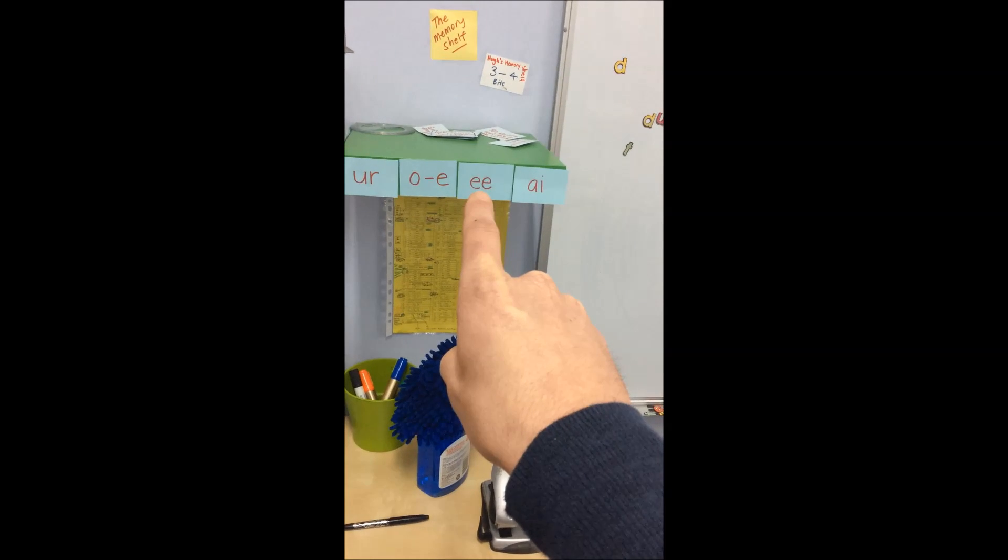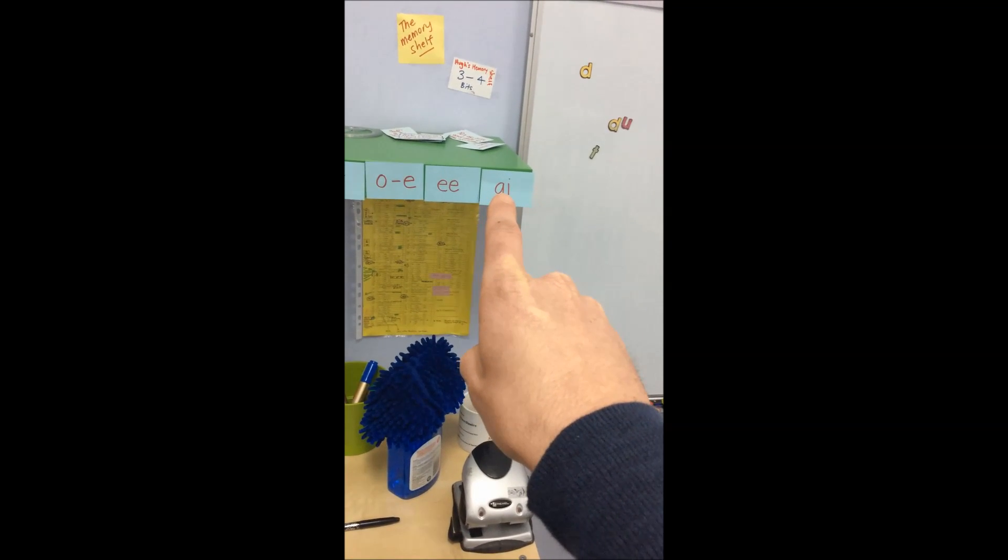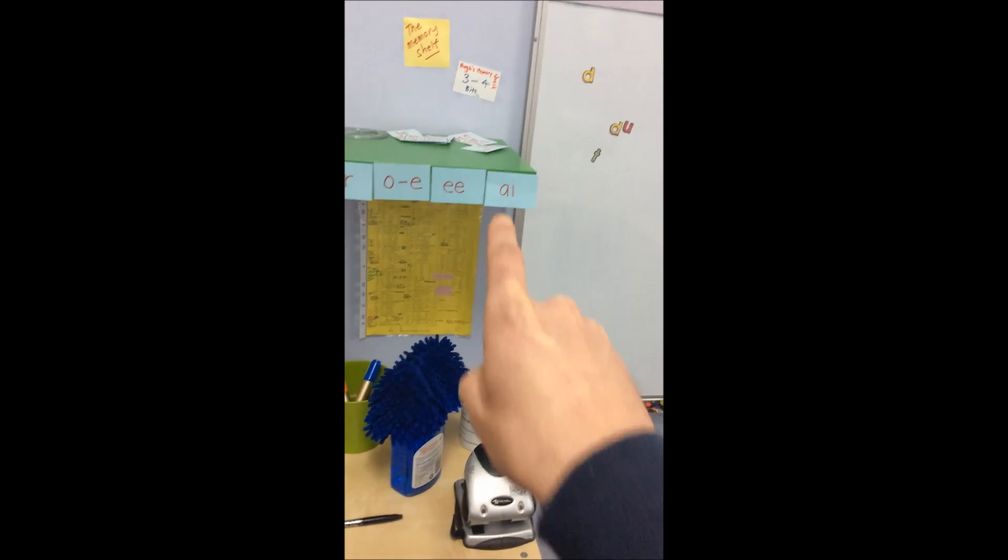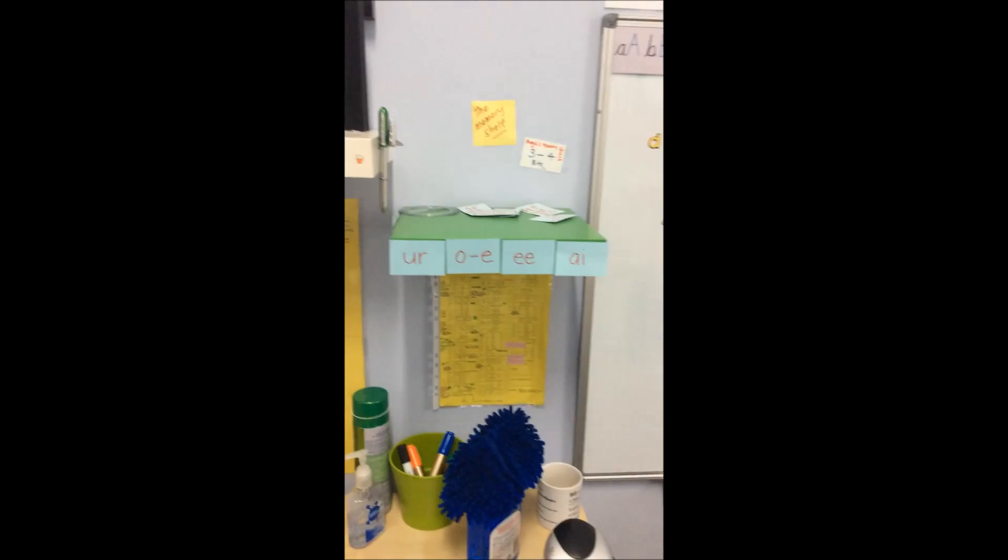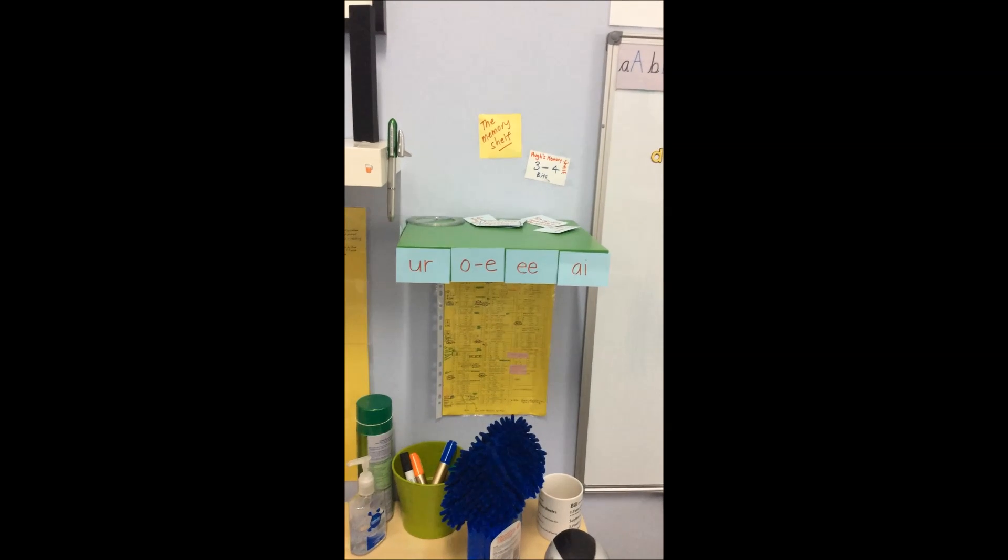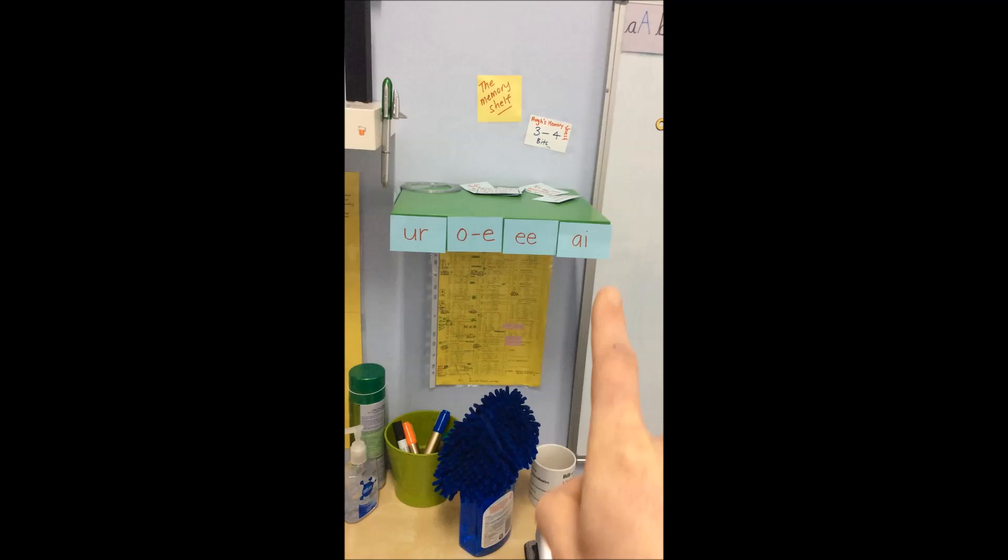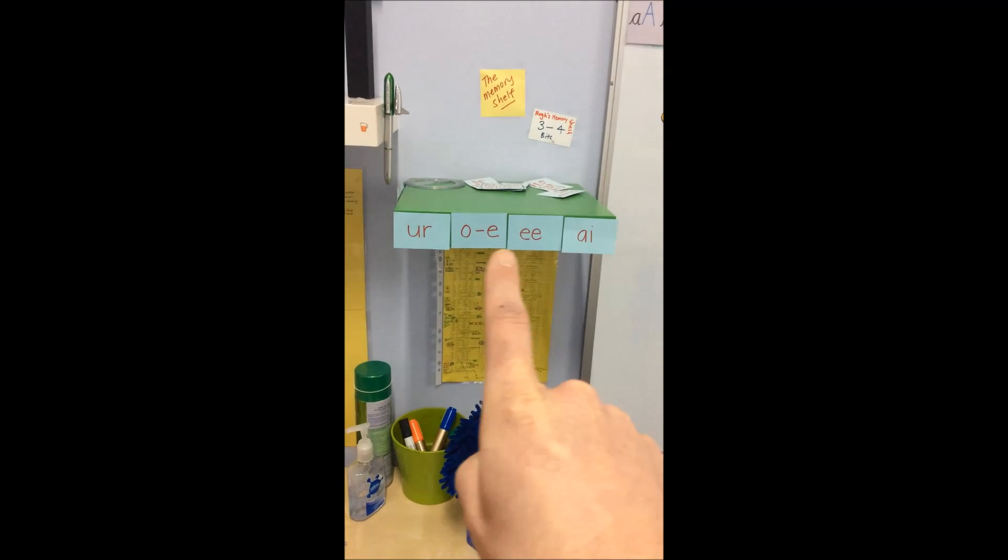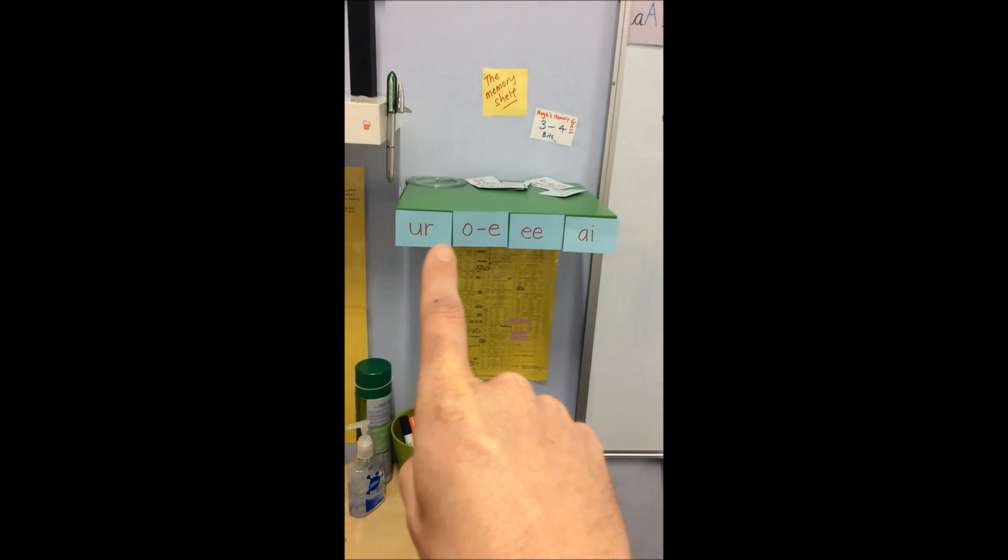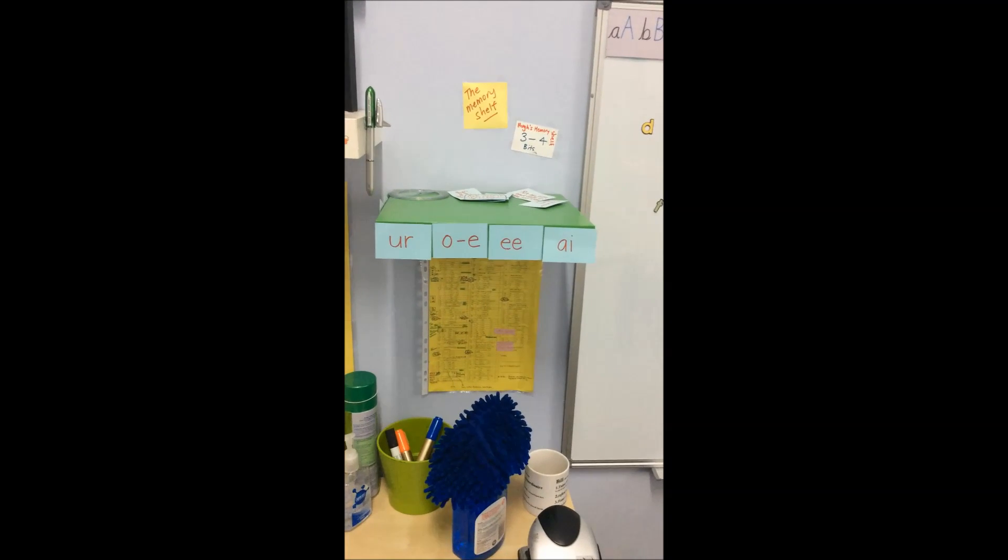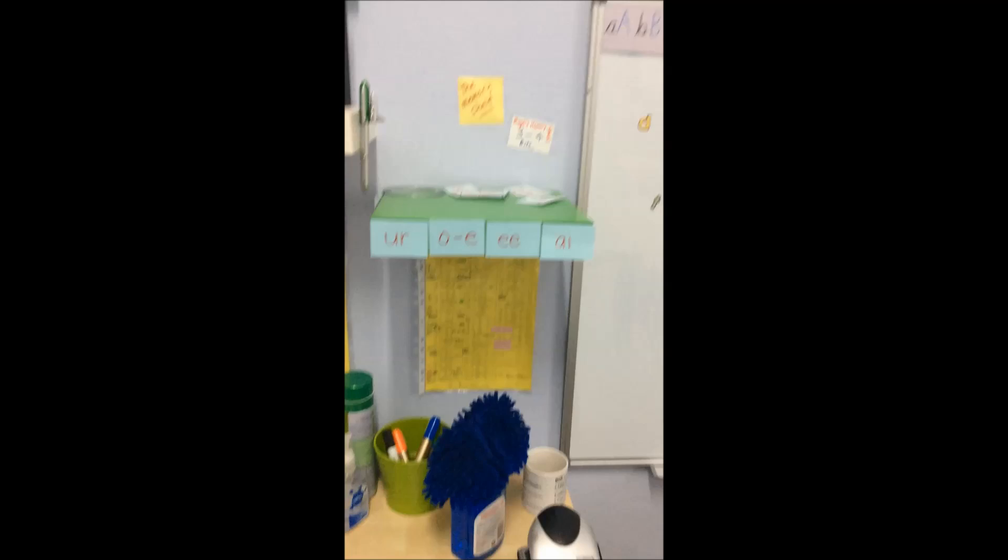Double E making the E sound and AI making the A sound. When A and I go walking, the A does the talking. So when Charlie came up to this section of Toe by Toe that dealt with soft G, you have to appreciate that working memory was already occupied with some other new graphemes that hadn't entirely been converted to long-term memory. So you can see the memory shelf was pretty much full.